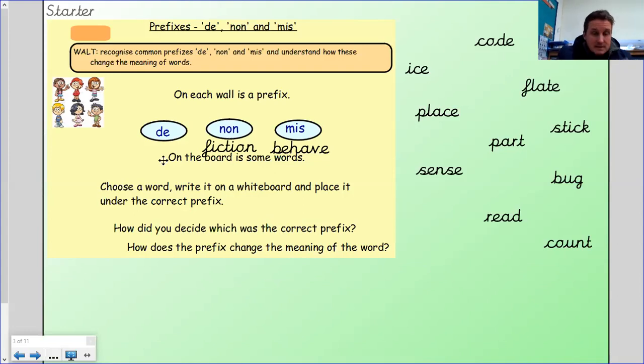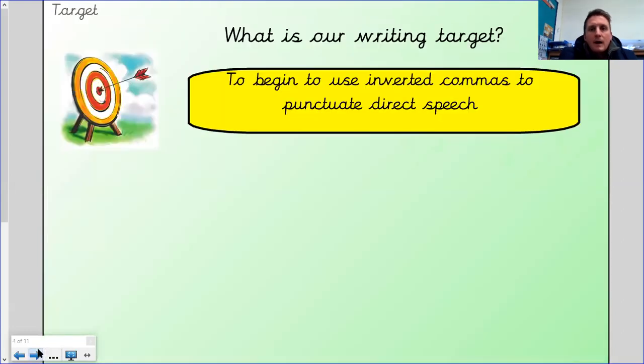Okay. What I want you to do is do what I've done. Do the three titles, de, non, mis, and then see if you can sort these words into each of those columns. Okay. I'll let you have a go at that yourself.